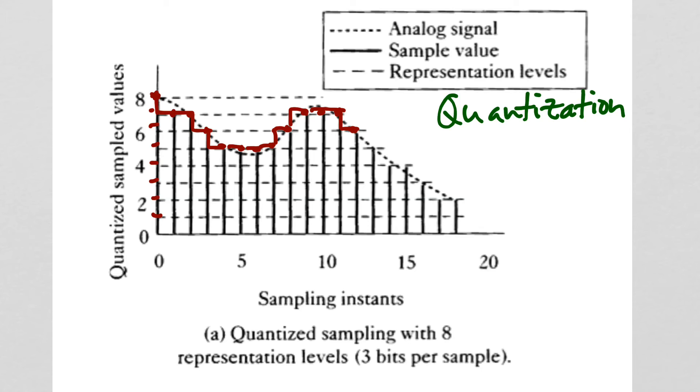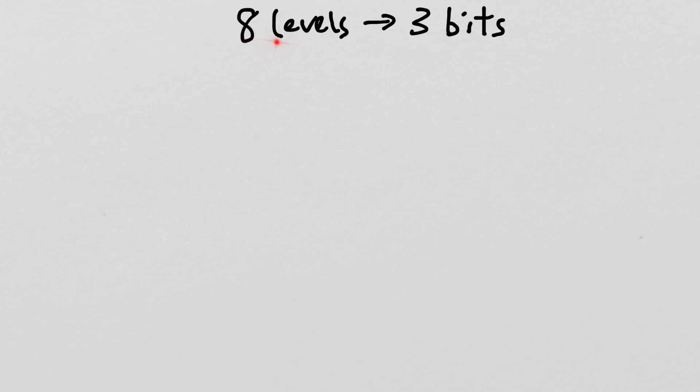And so you might notice here that, yes, we have 8 levels, but the way in which we actually express the quantization rate, or bit depth, is in terms of powers of 2, so here it's saying it's 3 bits. So why is that? Why are we going from 8 levels and then calling that a quantization rate, or bit depth of 3 bits?